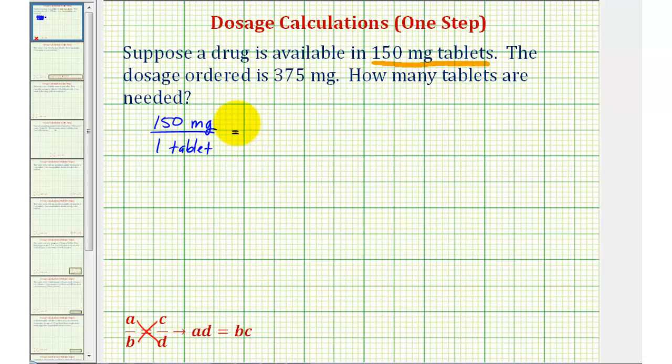And now for the second rate, we're going to use the fact that we need 375 milligrams. So the rate would be 375 milligrams per an unknown number of tablets, which we'll call X tablets.